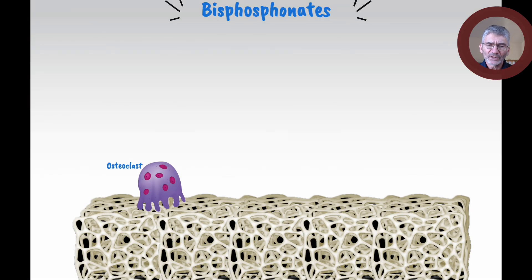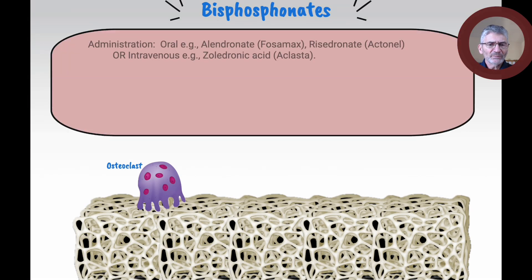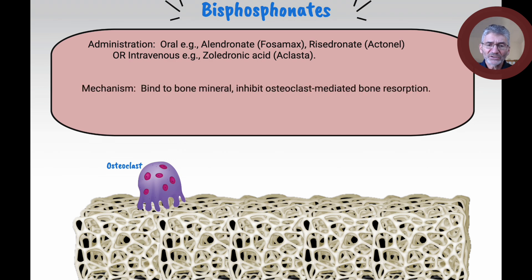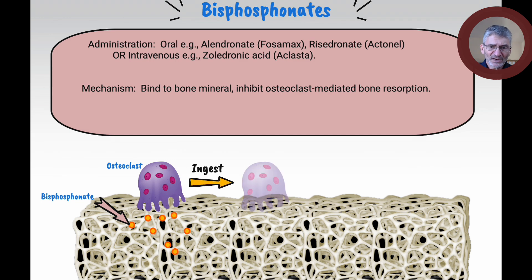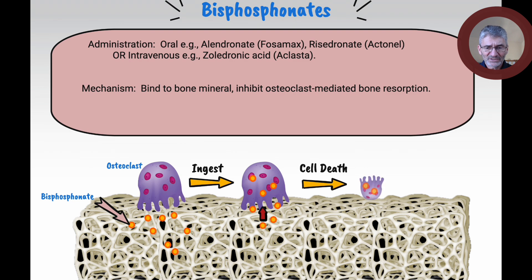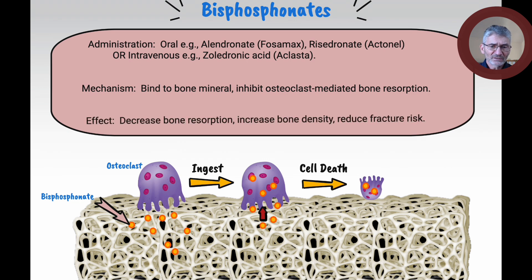Let's have a good look at bisphosphonates. They're normally administered orally or intravenously. Their mechanism is that they bind to the bone mineral itself and inhibit osteoclast-mediated bone resorption. You can see the osteoclast ingests the bisphosphonate, which causes cell death, and so osteoclastic activity is decreased. The effect is it decreases bone resorption, increases bone density, and reduces fracture risk.